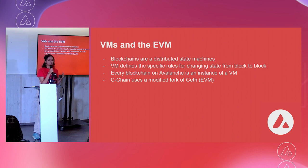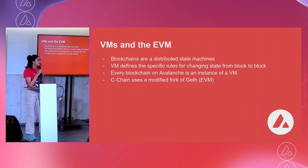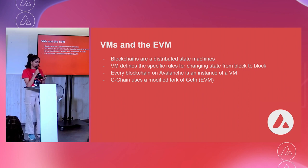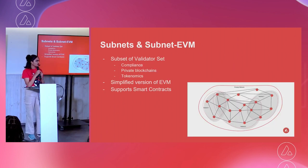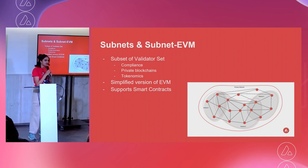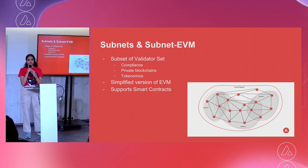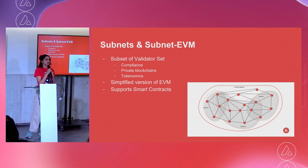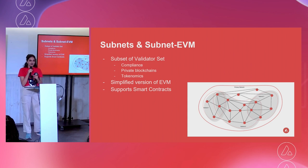The C chain uses a modified fork of geth. Now let's talk about subnets. A subnet is a sovereign network that defines its own rules regarding its membership and its token economics. The technical definition of a subnet is that it is a subset of the validator set.